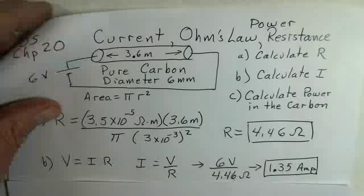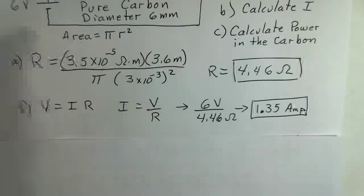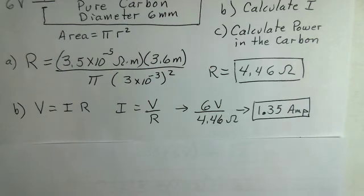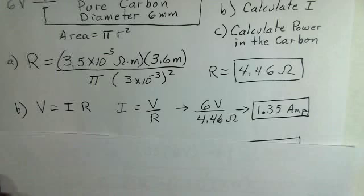So let's go a little further. To calculate the current, V equals IR, solve for I. That means when you take voltage divided by the resistance, the circuit has a 6 volt battery in it. We divide by the resistance we just found, and we get 1.35 amps.